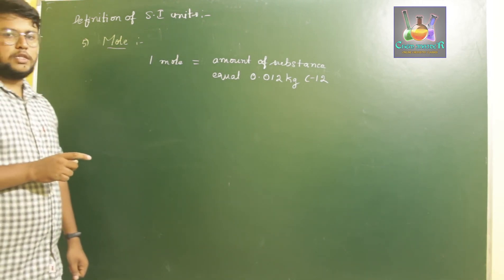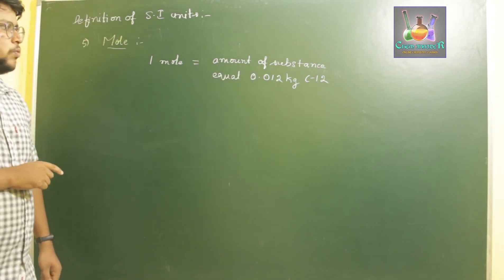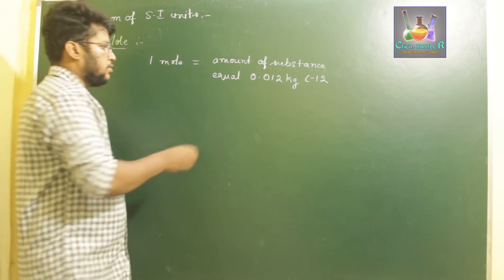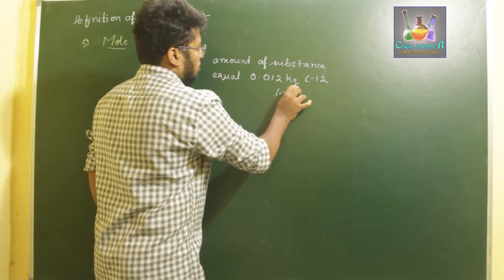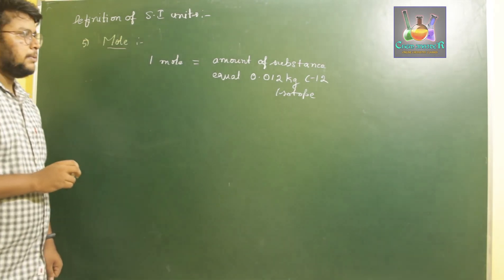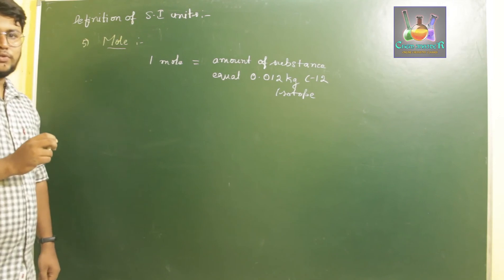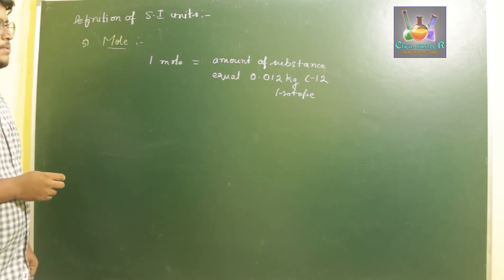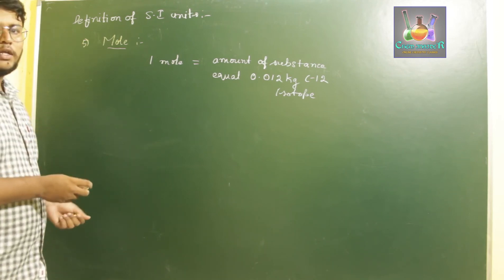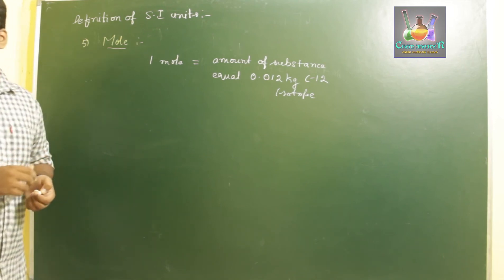A mole of a substance is the amount of substance equal to 0.012 kilograms of carbon-12 isotope. If a given substance has the same number of particles as present in 0.012 kilograms of carbon-12 isotope, then that amount is said to be one mole. This is the definition of one mole.